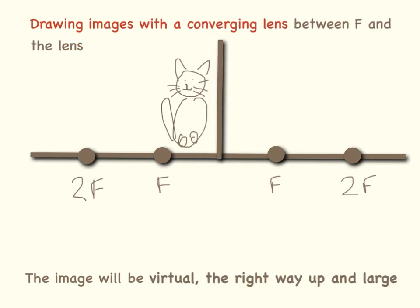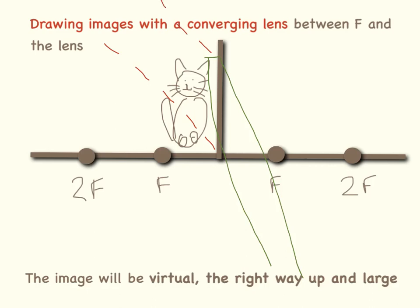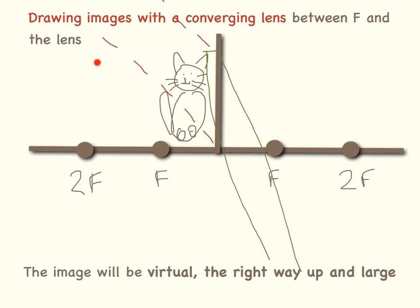Now Primrose is in between the lens and the focal point — this is a slightly different situation, something you'd get with a magnifying glass, but exactly the same rules apply. We go from the top of Primrose's head down through the middle of the lens, then across and down through the focal point. What you then need to do is track the image back. You will end up with an image which is virtual, on the same side as the object, the right way up, and much larger than actual. I've done another example of this in my next video, which is all about practising drawing lens diagrams.